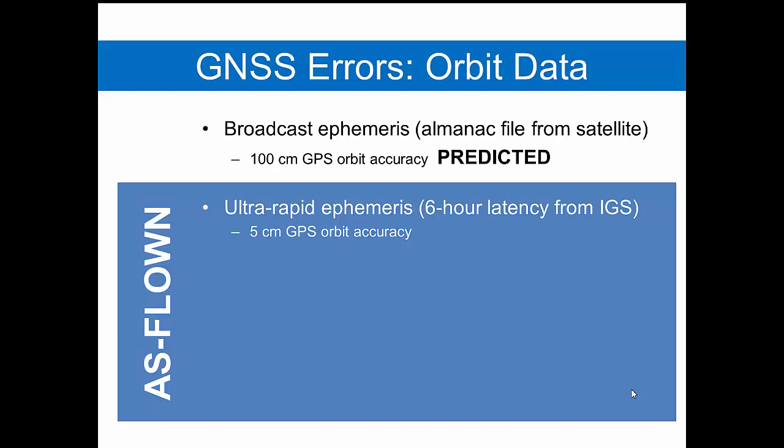Therefore, if we wait about six hours after the satellites have gone overhead, the IGS can provide what they call their ultra-rapid ephemeris, which then tells us the position of the satellite to within five centimeters. Wait another seven hours on average, and we can squeeze that down by a factor of two. Now we know the position of the satellite to the nearest two and a half centimeters, or the nearest inch.